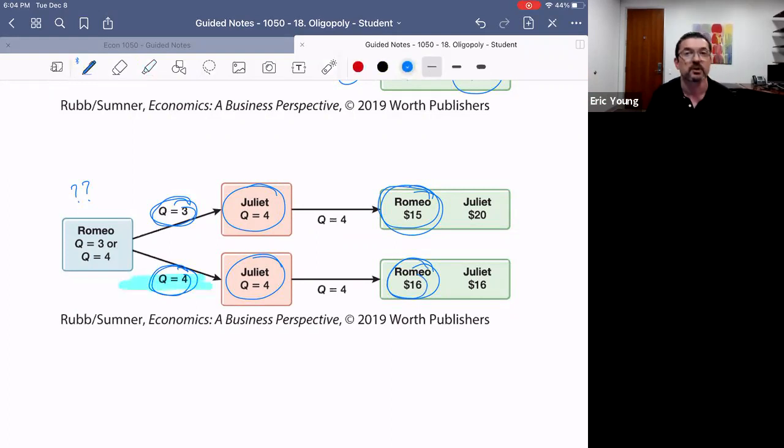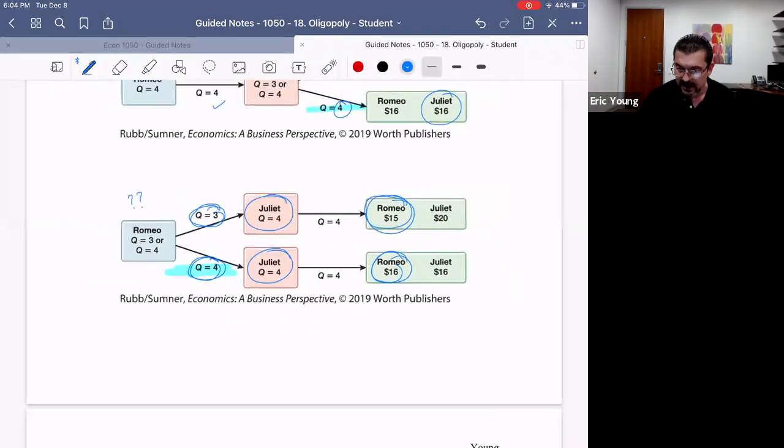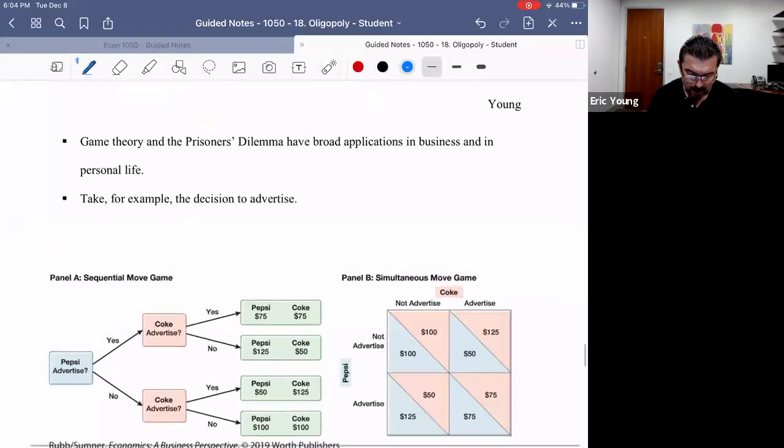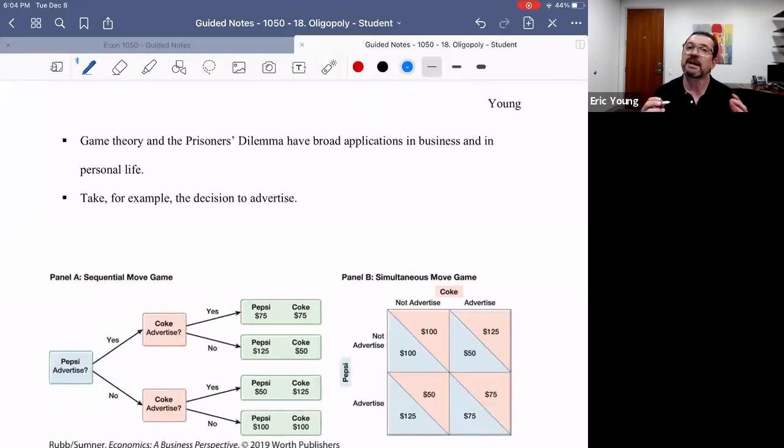And notice that this lands us exactly where we were on our payoff matrix, with a Q of four and a Q of four. Those are the dominant strategies; we just illustrated them in different ways.